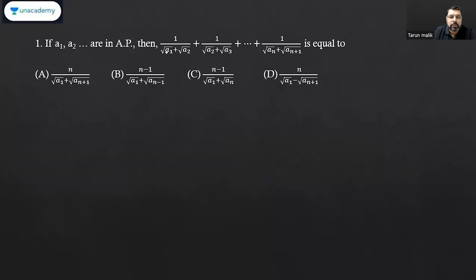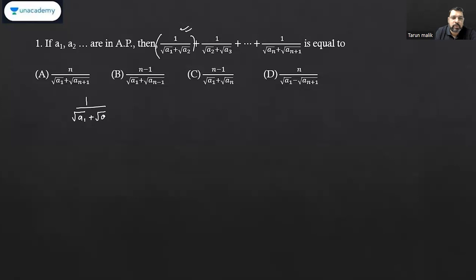If you look at the expression, we have surds in the denominator. Whenever such an expression is given, you need to rationalize it to simplify the denominator. If I take the first term — it is 1 upon (√a₁ + √a₂) — to rationalize it, I multiply both numerator and denominator by (√a₁ − √a₂).